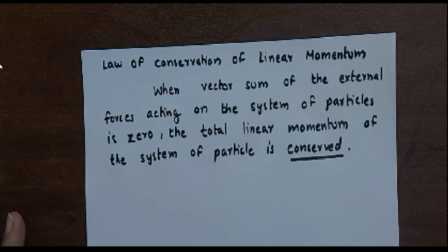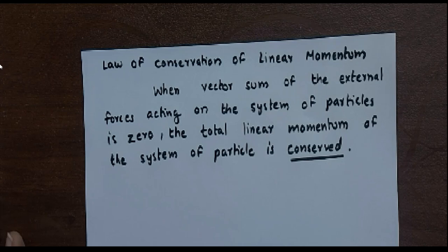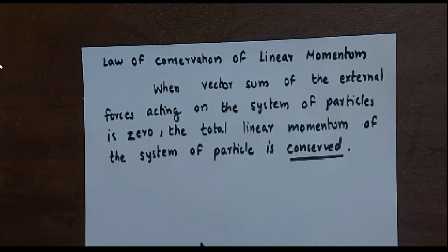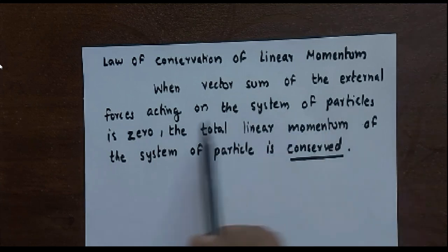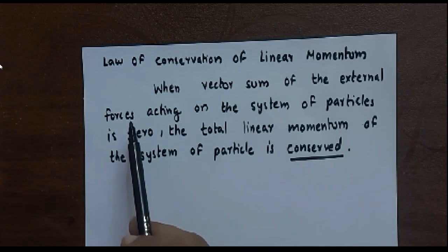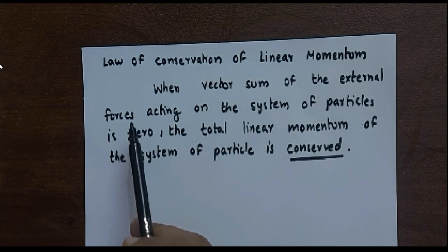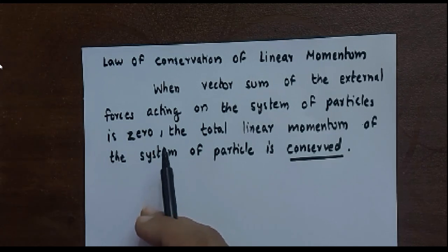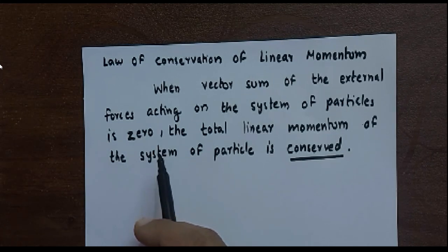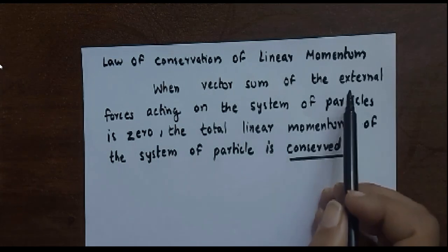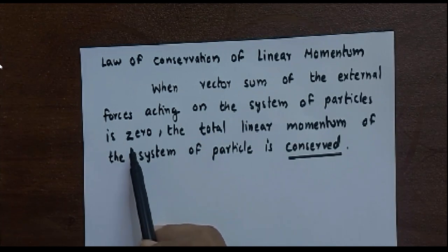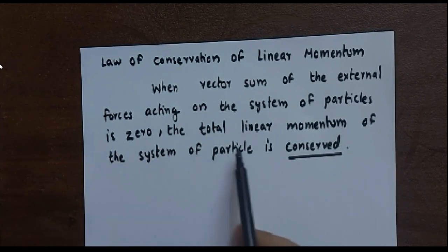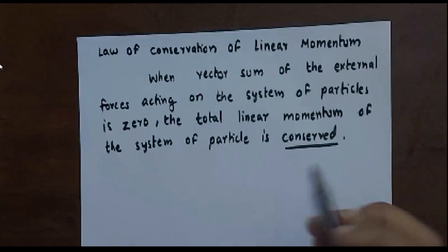The law of conservation of linear momentum states that when the vector sum of external forces acting on a system of particles is zero, we are talking only about external forces. We already know the net internal forces acting on the system of particles is already zero. If the external force is equal to zero, then in that case the total linear momentum of the system is conserved.